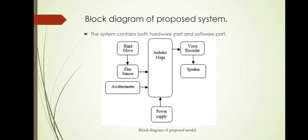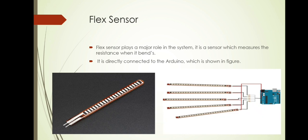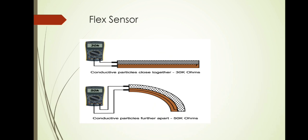Let's see the working of every component. Flex sensor plays a major role in the system. It is a sensor which measures resistance when it bends. It is directly connected to the Arduino which is shown in the figure. In initial state, the flex sensor resistance is about 30 kOhm. Whenever the sensor bends from its initial position, the resistance value will increase. Flex sensor resistance is directly proportional to the angle measure.